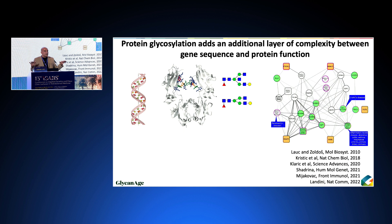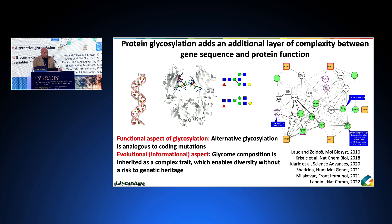Glycosylation is an additional layer of complexity. The proteins will have a polypeptide part defined by a gene — it's the billions of years of wisdom — and then it will have a glycan part defined through a network of dozens to hundreds of genes. This is the network we mapped for IgG glycosylation, which will create a glycan structure added to the protein. From a functional aspect, alternative glycosylation is analogous to a coding mutation. We all know a coding mutation can kill you: wrong amino acid, wrong protein sequence, protein does not function. Alternative glycosylation can have the very same effect. But from an informational or evolutionary aspect, glycome composition is inherited as a complex trait, and this enables diversity without the risk to genetic heritage.